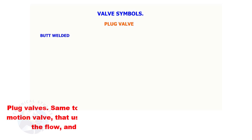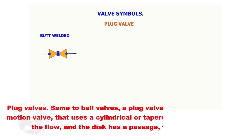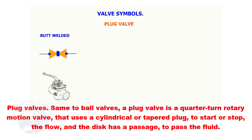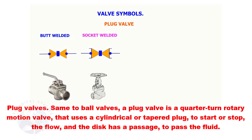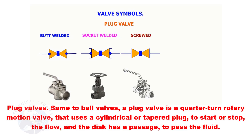Plug valves. Same as ball valves, a plug valve is a quarter turn rotary motion valve that uses a cylindrical or tapered plug to start or stop the flow. The disc has a passage to pass the flow and is in plug shape.